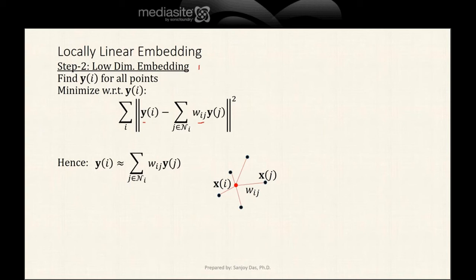Yi should be approximately equal to summation Wij times Yj. This is the same relationship that held for the Xi. Each Xi was equal to summation Wij times Xj. Now we assume that for the same weights, Yi is approximately equal to Wij times Yj.